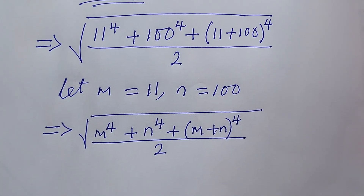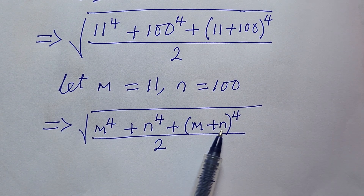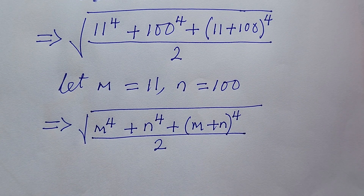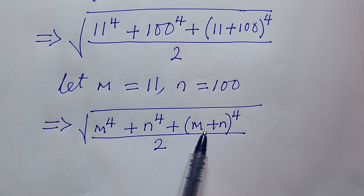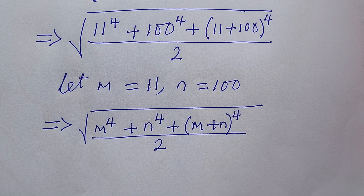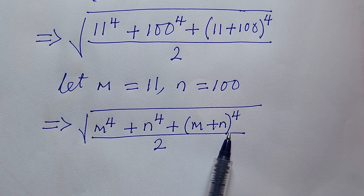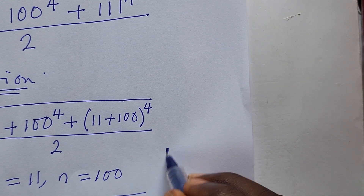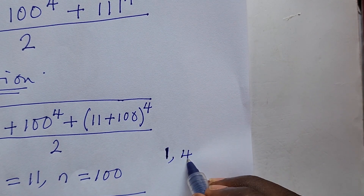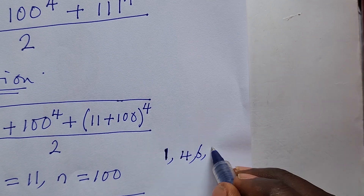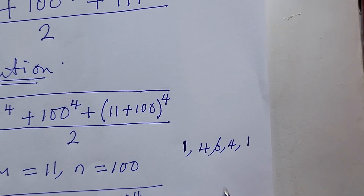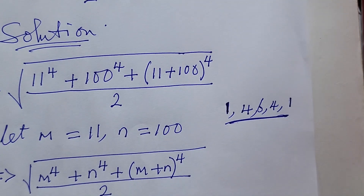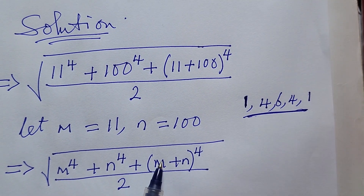Now we want to expand (m plus n)^4 using binomial expansion alongside Pascal's triangle. We are looking for the fifth row of Pascal's triangle. The fifth row gives us the coefficients: 1, 4, 6, 4, 1. We will use these coefficients to expand (m plus n) to the power of 4.